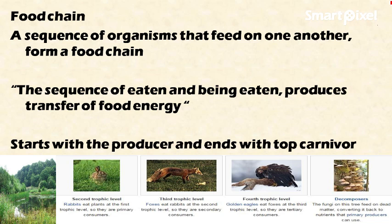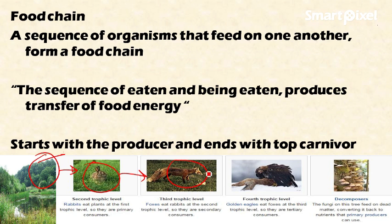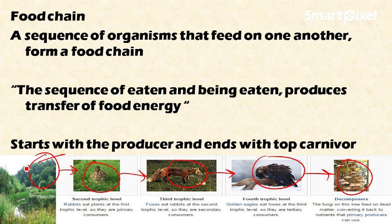I will explain with the help of this diagram. The food chain starts with the producer — here the producer is living plants. These plants are eaten by the rabbit, and this rabbit is eaten by the fox. This fox is eaten by the golden eagle. After death, the golden eagle is decomposed by the saprophytes.